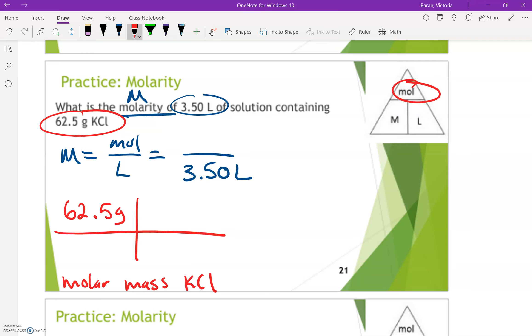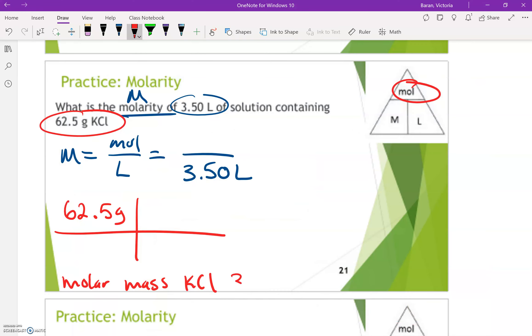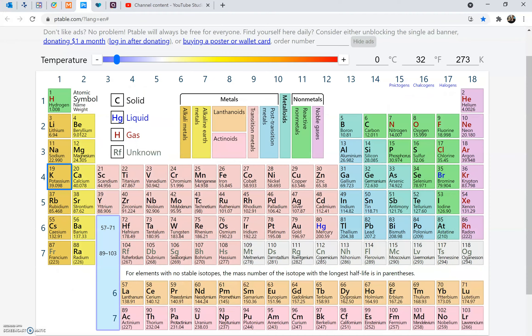In order to find molar mass, I'm going to have to use my periodic table. So I'm going to start with K. So it said there was one K, which is potassium. That's 39.098. Plus, and then we have Cl, and we just have one Cl, which is chlorine.